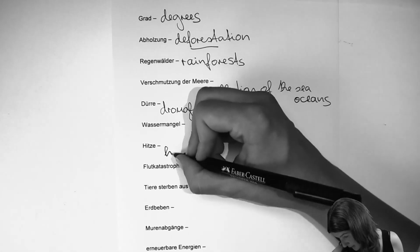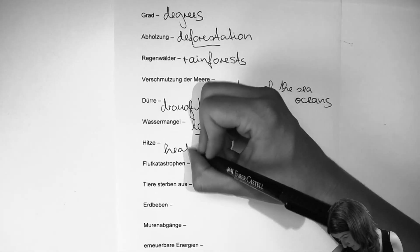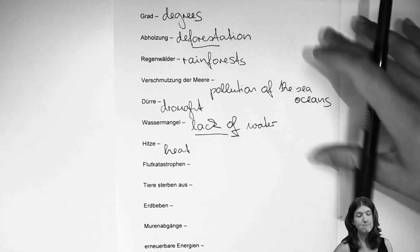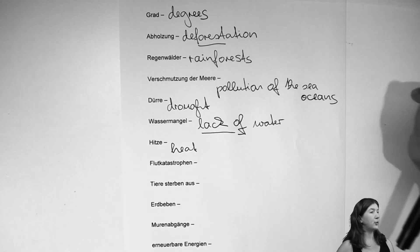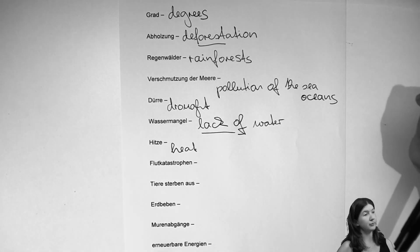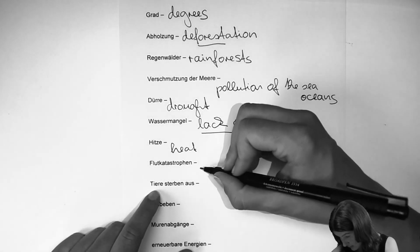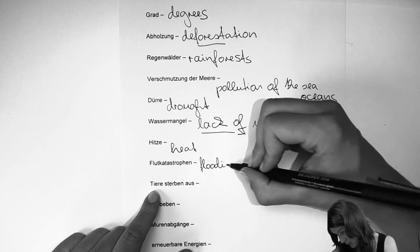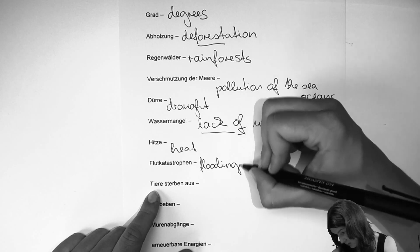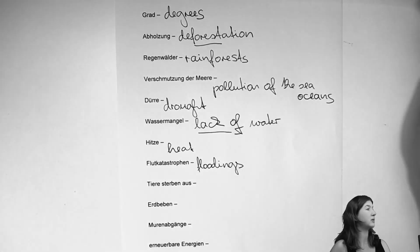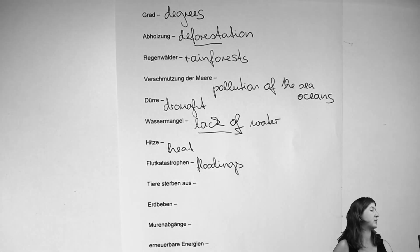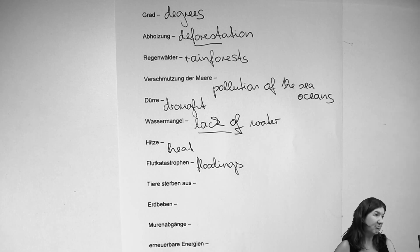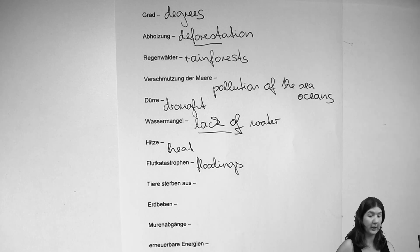'Hitze' — that should be clear: heat. Flood catastrophes — we don't necessarily need the word 'catastrophe' with floodings alone, because it's obvious that a flooding is a catastrophe. So we can just simply say floodings.